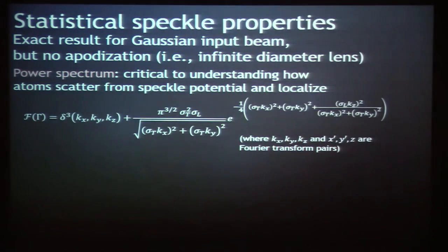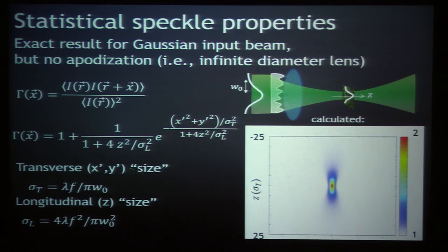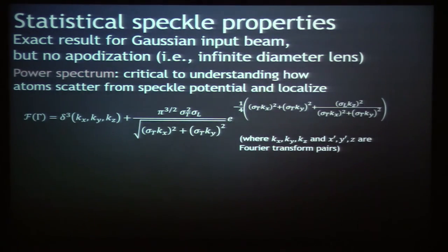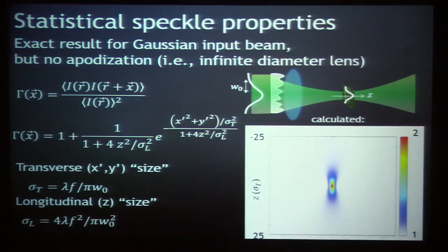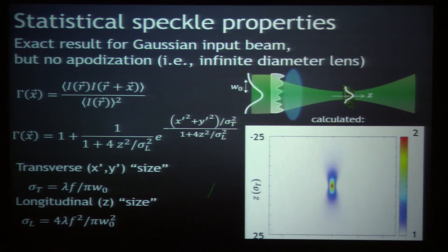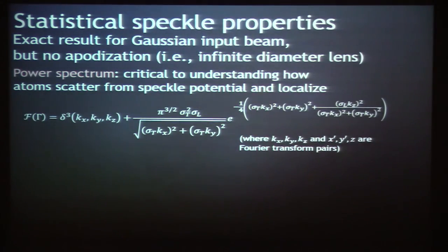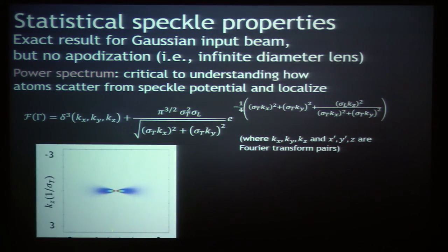Let me tell you a result you can calculate: the speckle autocorrelation where you have a Gaussian input beam, no longer uniform illumination, but an infinite diameter lens. Because this makes it possible to calculate things. This is what you get for the intensity autocorrelation. It kind of looks sort of Gaussian-ish. It's not really, but it's close. What's really important is the Fourier transform of this intensity autocorrelation, the power spectrum. This is what determines how the atoms scatter and change their momentum when they move through the speckle potential. If you plot it, there's no weight along the direction of propagation, and many papers have been written about this.